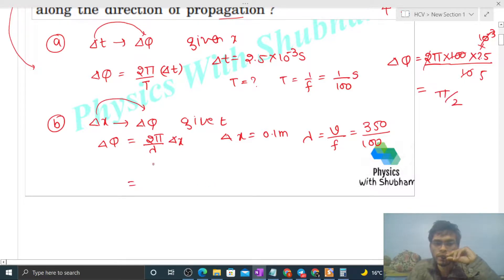And here put the values: 2π divided by wavelength, wavelength is 350 upon 100, multiply by position difference which is 0.1. So solve this: this becomes 10, this 10 cancels, so it will be 2π divided by 35.